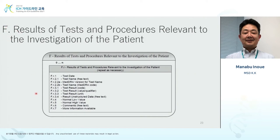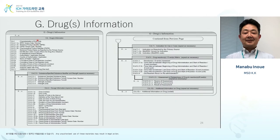Next, F — results of tests and procedures relevant to the investigation of the patient. For each AE, sometimes there is no one-to-one result, so it's zero-to-many. Test date, test name, and the MedDRA code of the test name are entered. Test result, normal low value, and normal high value are also entered. So this is what goes into F.